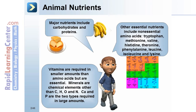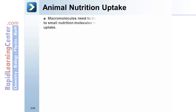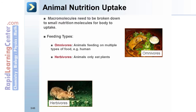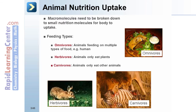Calcium and phosphate are required in larger amounts. Animal nutrition uptake: macromolecules need to be broken down to small nutrient molecules for the body to absorb them. Feeding types include omnivores — animals feeding on multiple types of food, for instance humans; herbivores — animals that only eat plants; and carnivores — animals that only eat other animals.